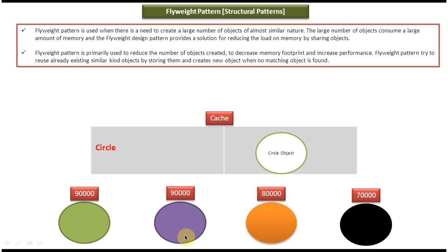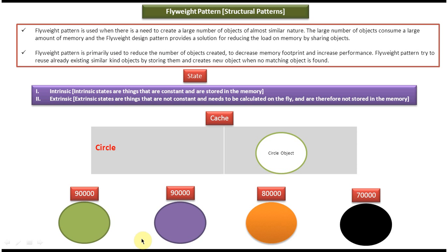In the Flyweight design pattern there are two states. The first state is Intrinsic and the second state is Extrinsic.